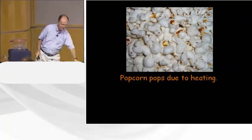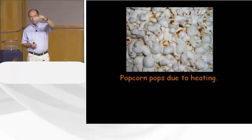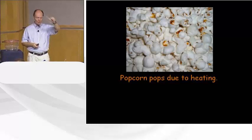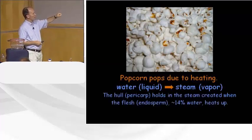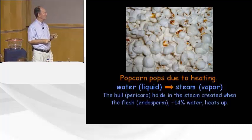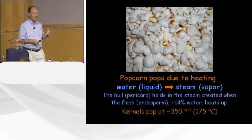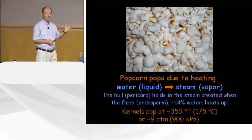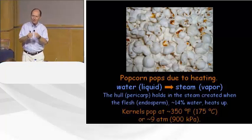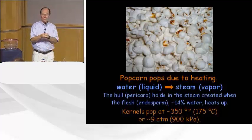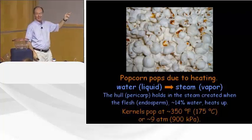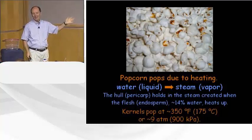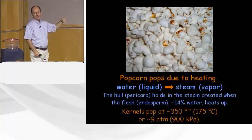How about popcorn? Basically it's a liquid-to-vapor transition. You heat up the popcorn; the hull holds in the steam created when the flesh — about 14% water — heats up. The kernels pop at about 350°F or 175°C at a pressure of 9 atmospheres. The pressure keeps rising until the hull can't hold it anymore and it explodes. These non-popping ones are ones with leaky hulls. If you prick good popcorn with a needle, you'll get all of these. Also, if you leave popcorn sitting on the shelf for months and it dries out, it doesn't pop because there's not enough water to build up the pressure.